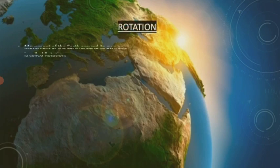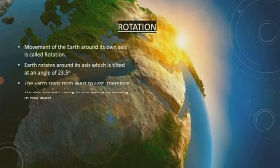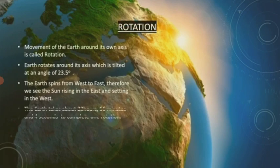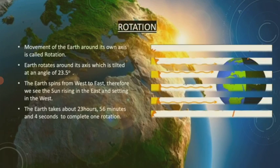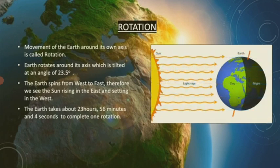Rotation. Movement of the Earth around its own axis is called rotation. Our Earth is basically tilted at an angle of 23.5 degrees, so it rotates around its axis which is tilted at this particular angle.